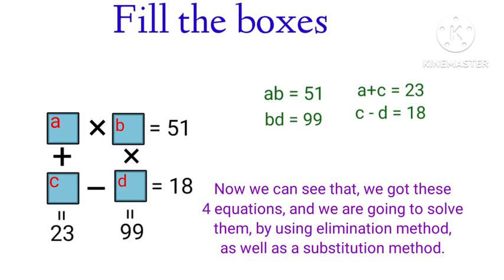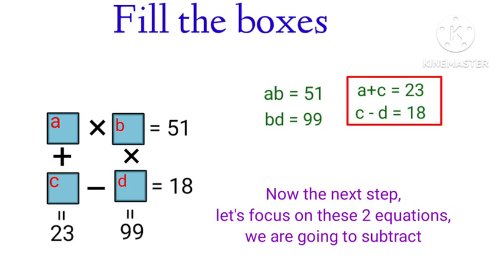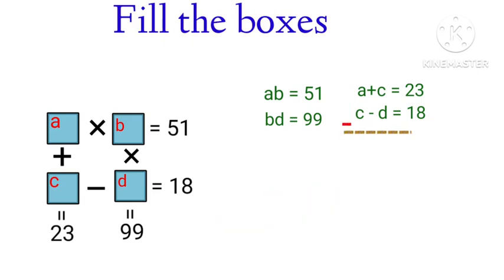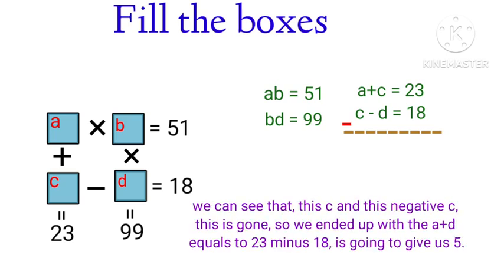Now we have 4 equations and we are going to solve them using the elimination method as well as the substitution method. Let's focus on the last 2 equations and subtract them. I am going to change the sign — C becomes negative and the negative D becomes positive. The C terms cancel, and we end up with A plus D equal to 23 minus 18, which gives us 5.